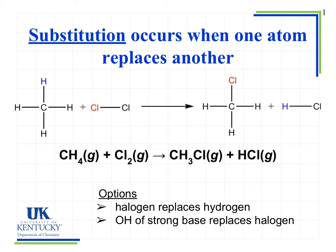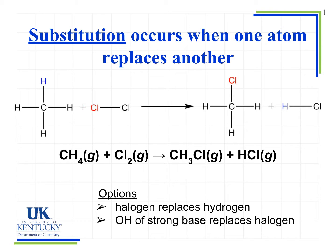For example, we have CH4 reacting with Cl2. Under the right conditions, one of the chlorine atoms will replace a hydrogen atom on the CH4. For our product, we can see that the chlorine has taken the place of a hydrogen, and the other chlorine in the Cl2 molecule is paired with the hydrogen that was removed from the original molecule. This can be drawn out in Lewis structure format, or written as an equation: CH4 + Cl2 produces CH3Cl and HCl.